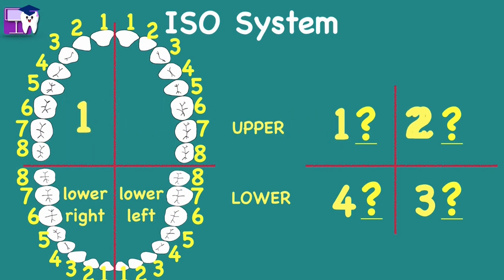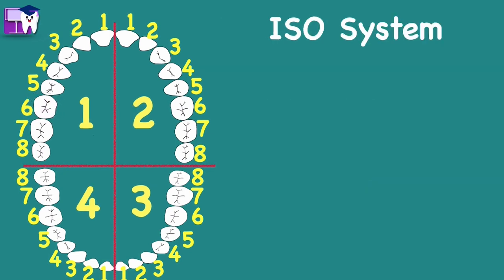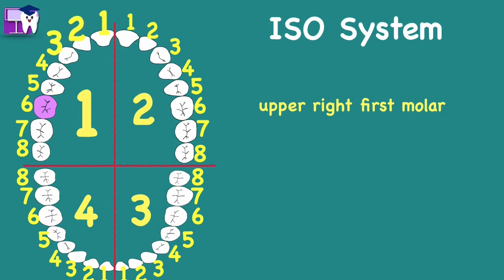In describing a single tooth, for example: the upper right first molar is located in the first quadrant, and when you count starting from the central incisor, the first molar is number 6. So write number 1 as the first digit, as it represents the quadrant, and write number 6 as the second digit, as it represents the tooth. Describe the tooth as 1-6, not 16.